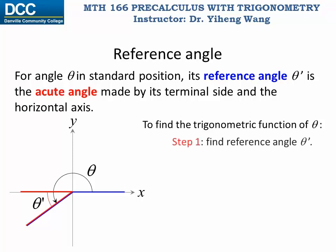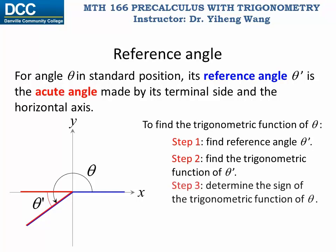Once we find this reference angle, we can use it to help us find the trigonometric function of angle theta. The first step is to find the reference angle theta prime. Then, instead of finding the trigonometric function of theta, we find the trigonometric function of theta prime, because theta prime is an acute angle and its trigonometric function values are all positive, making them more convenient to determine. Once we determine that, we add the negative sign when necessary, depending on what quadrant the terminal side of our original angle theta falls in.